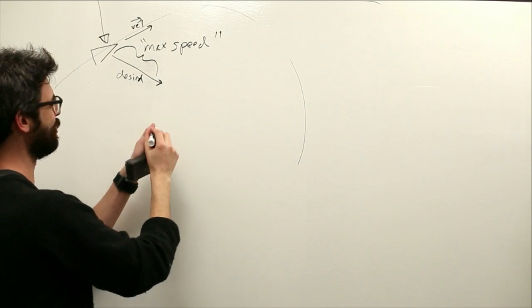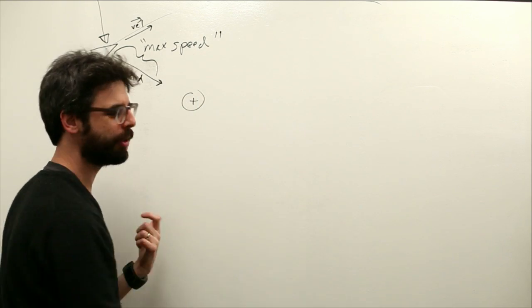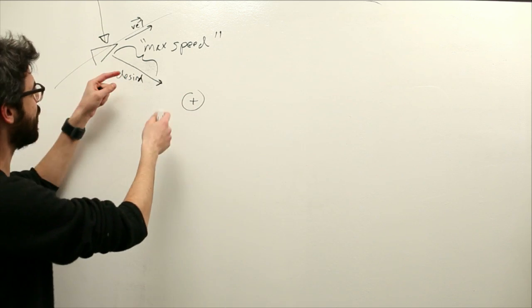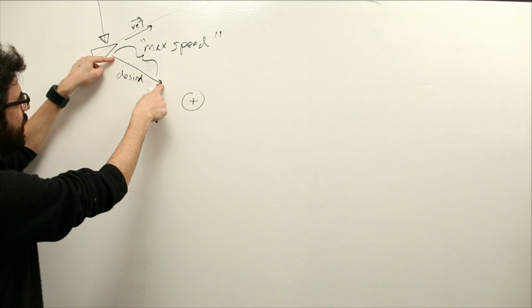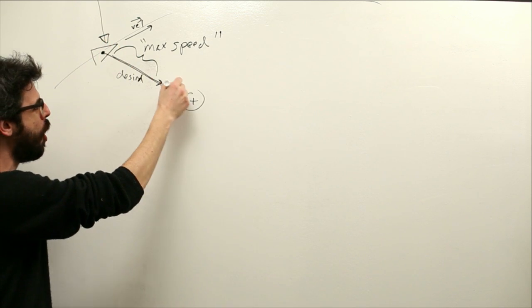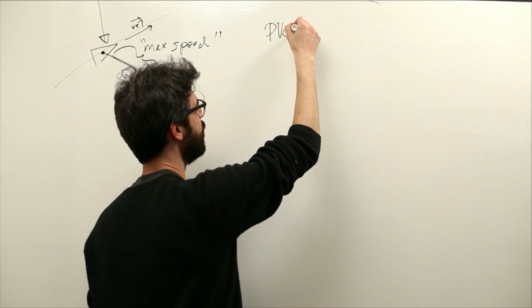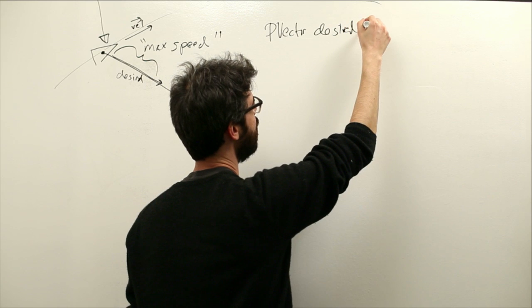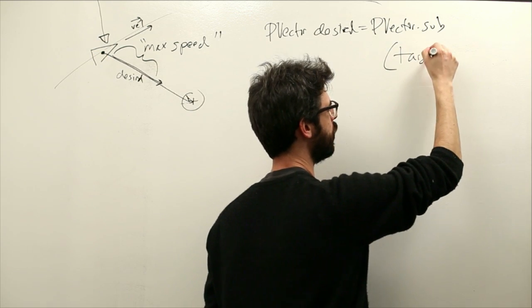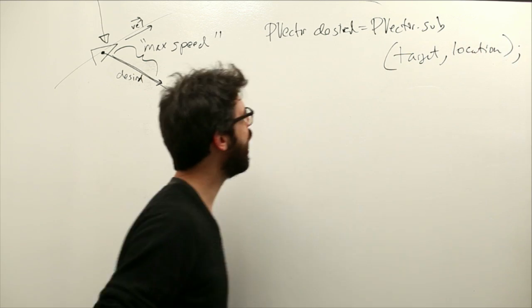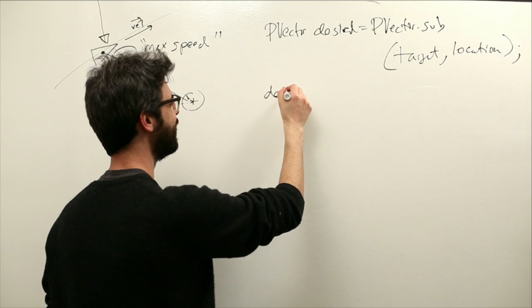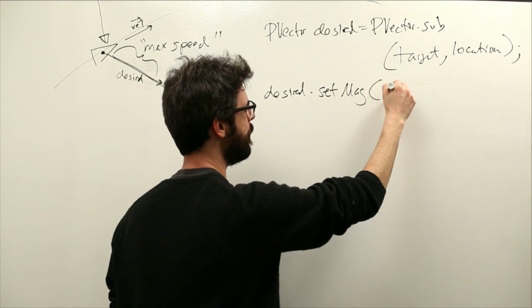So let's just remind ourselves how this kind of calculation works with code, right? We know we need to calculate, the steering force ultimately is what we want to calculate. But first we need to calculate that desired velocity so that we can calculate steering. Okay, so how do we calculate that desired velocity? First, we just need a vector that points from the location all the way to the target. How do we do that? I'm going to say PVector desired equals PVector dot subtract what? Target minus location. Now I have a vector that points all the way from here to there. Now I need to make its magnitude maximum speed. This is so easy. Desired dot set magnitude to max speed.